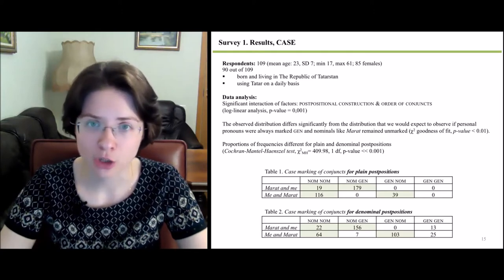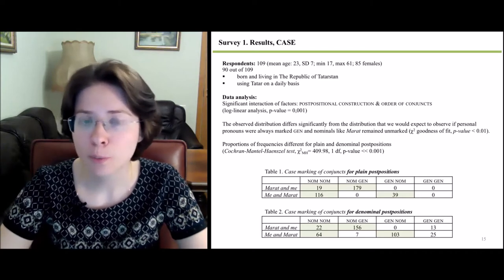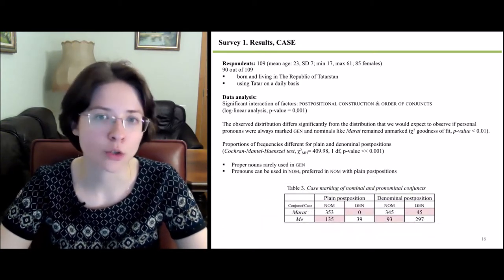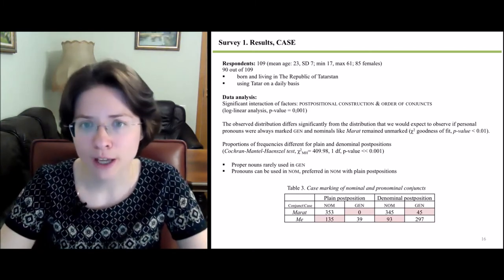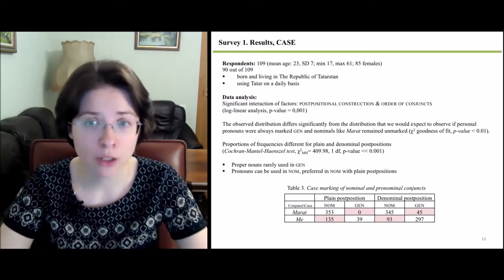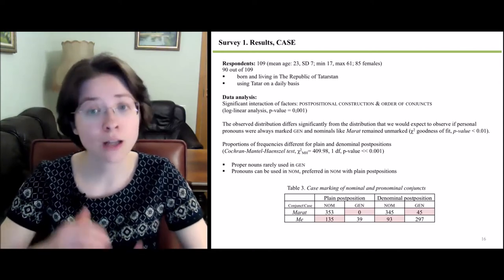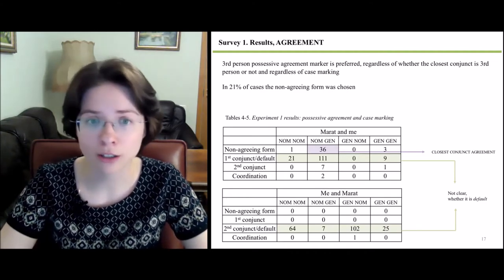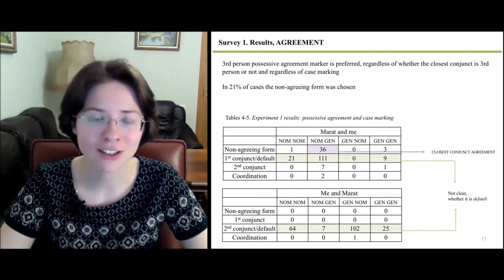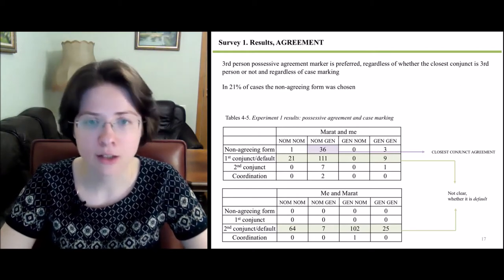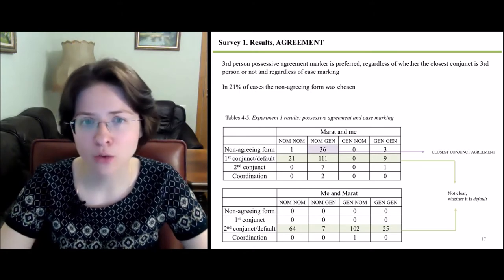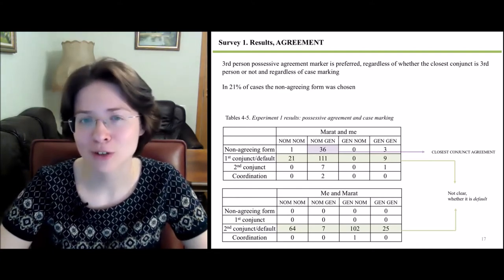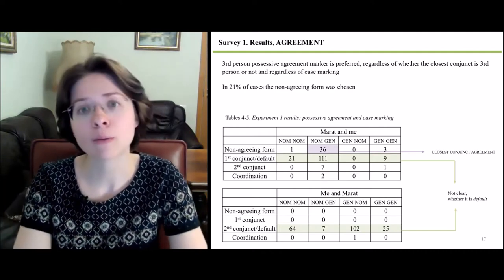The data analysis has shown significant interaction of factors. We observe different proportions of frequencies for plain and denominal postpositions. If we aggregate the data by the case in which nominals and pronouns were used without regard to the order of conjuncts, we see that proper nouns are rarely used in genitive, while pronouns can be used in nominative and are even preferred in nominative with plain postpositions — which is somewhat unexpected. If we consider agreement, we observe that third person possessive agreement marker is preferred regardless of whether the closest conjunct is third person and regardless of case marking. In 21% of cases the non-agreeing form was chosen, which looks like an artifact of closest conjunct agreement. Crucially, the type of coordination used does not make it clear whether the third person possessive agreement marker is an instance of default agreement or agreement with the proper name conjunct.